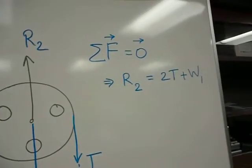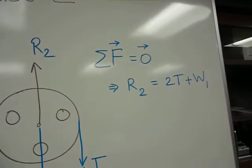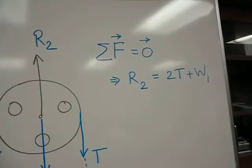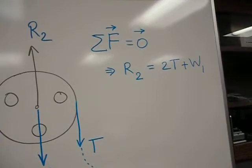And as a result the static equilibrium of the pulley gives me sigma F equals 0 with R sub 2 equals 2T plus W sub 1.